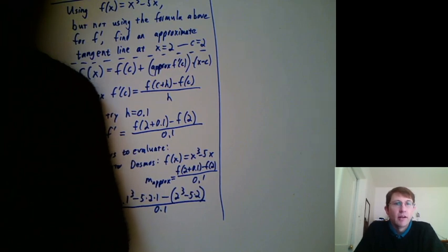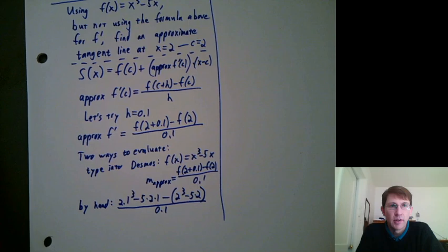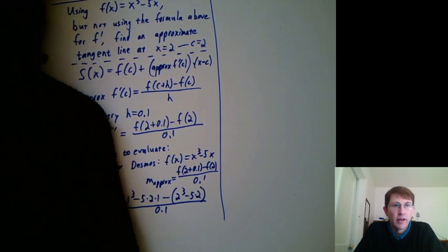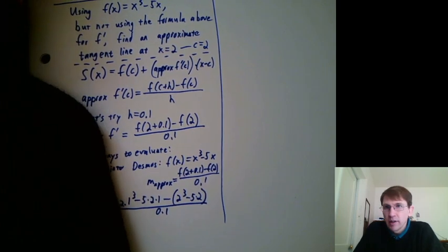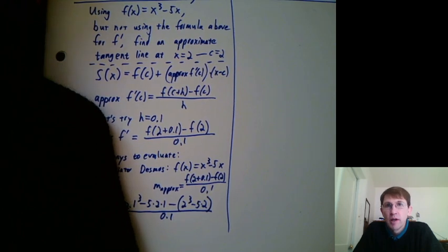And now, either way, I can define my other line. So that was f(2), which we know is -2, plus m approx times (x - 2). And there I'm getting this green line. And would you say that the green line and the black line, the black line is the true tangent line that we did in the previous example problem. The green line is our approximate tangent line. Would you say those are pretty good? Did I do a pretty good job coming up with an approximate slope there? Yeah, I'd say that's pretty good.